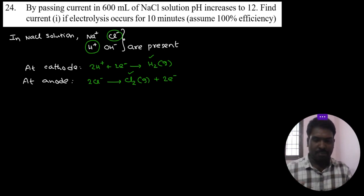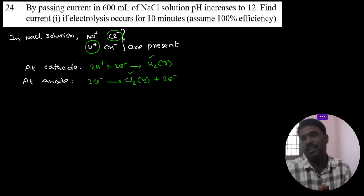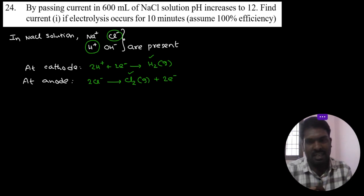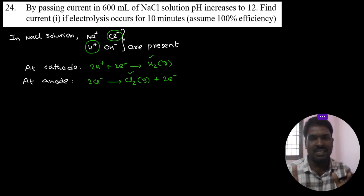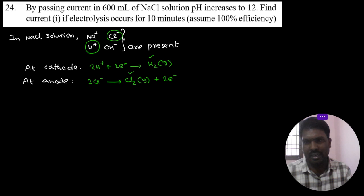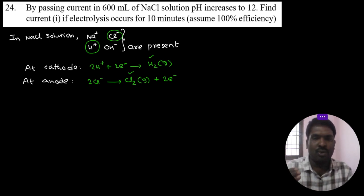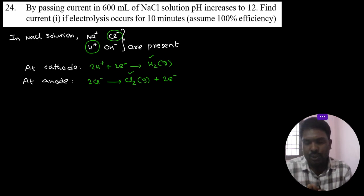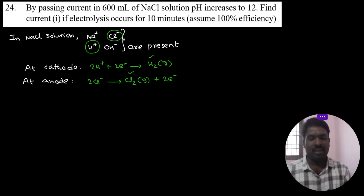At cathode, hydrogen gas evolves; at anode, chlorine gas evolves. The ions left in solution are Na⁺ and OH⁻, meaning NaOH remains. So when NaCl aqueous solution undergoes electrolysis, the resulting solution is basic or alkaline in nature due to the presence of OH⁻ ions.